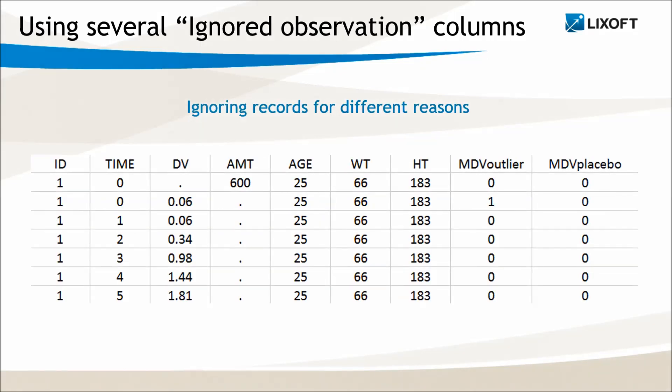Having several ignored observation columns permits ignoring records for different reasons. For instance, in this example, I have one column to ignore outliers and one column to ignore placebo data, and the header names permit to remember it.